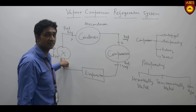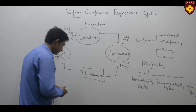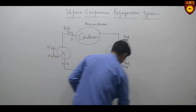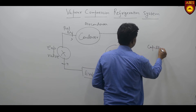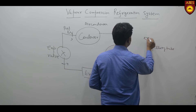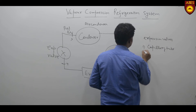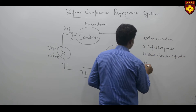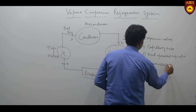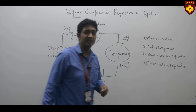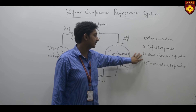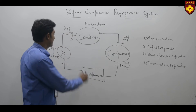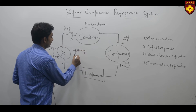Then this liquid refrigerant passes through the expansion valve and we get cooling. There are many types of expansion valves, such as capillary tube, hand operated expansion valve, and thermostatic expansion valve. The use of individual expansion valves is as per their need. In home appliance systems, we use a capillary tube as the expansion valve.